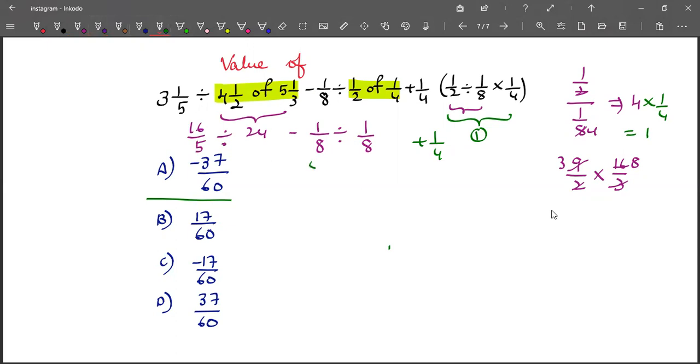If you observe this, 1 by 8 divided by 1 by 8 will give us 1, isn't it? So 16 by 5 divided by 24 minus 1 plus 1 by 4.